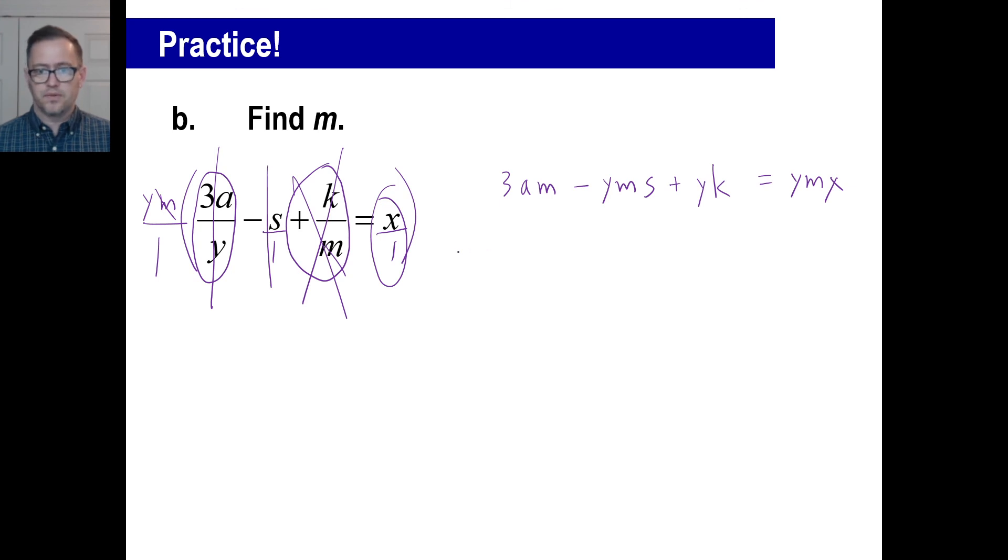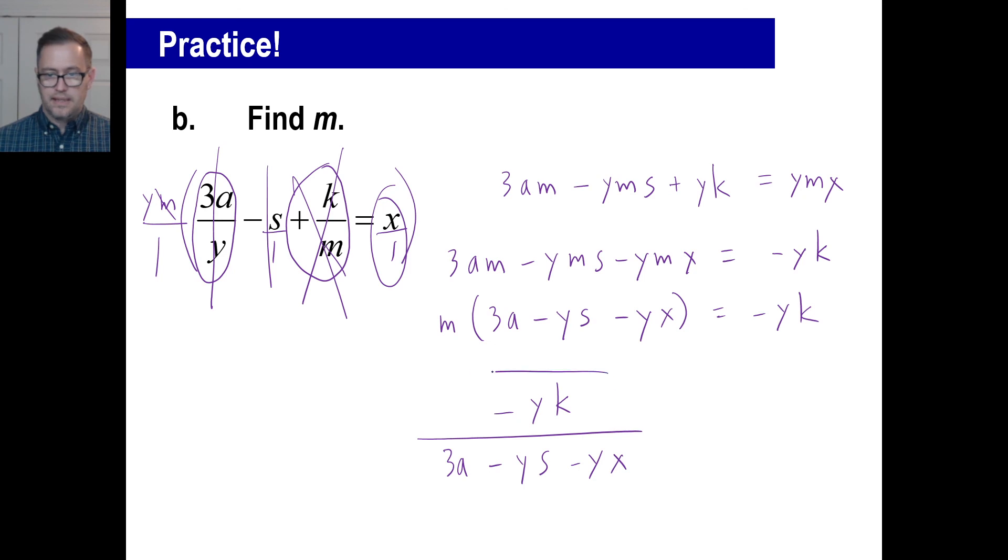So, I'm leaving 3AM. I'm leaving YMS. And I'm going to chunk over that negative YMX. And I'm chunking over the Y times K. That's going over there. Okay. So, I'm pulling out my M. What's left? I got my 3A. I got YS. I got YX. That equals negative YK. And, of course, we know the last thing we need to do is just write this negative YK with this as our denominator. 3A minus YS minus YX. And that is it.